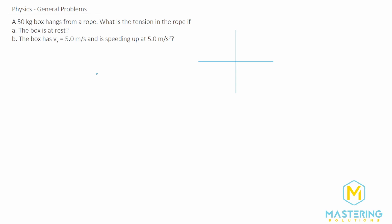Welcome to Mastering Solutions. In this general problem, they tell us that a 50-kilogram box hangs from a rope, and we need to find what the tension in the rope is if the box is at rest, and then for part B, if the box has a velocity of 5 meters per second and is speeding up at 5 meters per second squared.